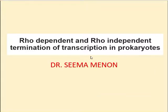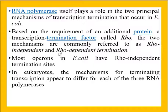Dear students, in this class we will discuss the two different termination processes of transcription in prokaryotes. They are called rho-dependent and rho-independent termination of transcription. Transcription is the first step in protein synthesis — it is the process in which a new RNA called mRNA is synthesized complementary to a DNA template, which is the gene. This is catalyzed by the enzyme DNA-dependent RNA polymerase. There are three steps in transcription: initiation, elongation, and termination. We are only dealing with the last part, termination.